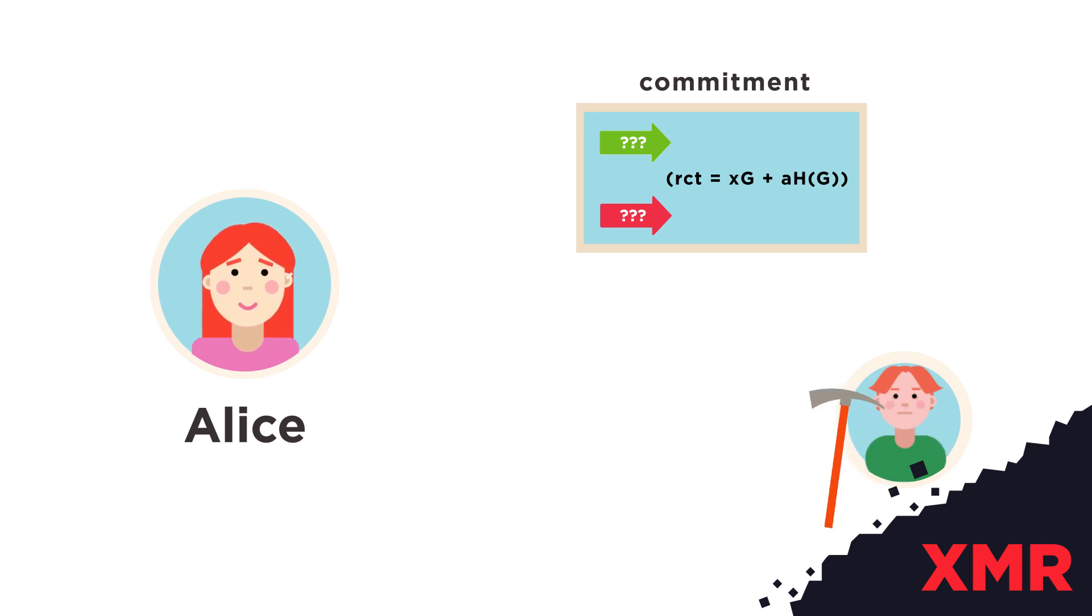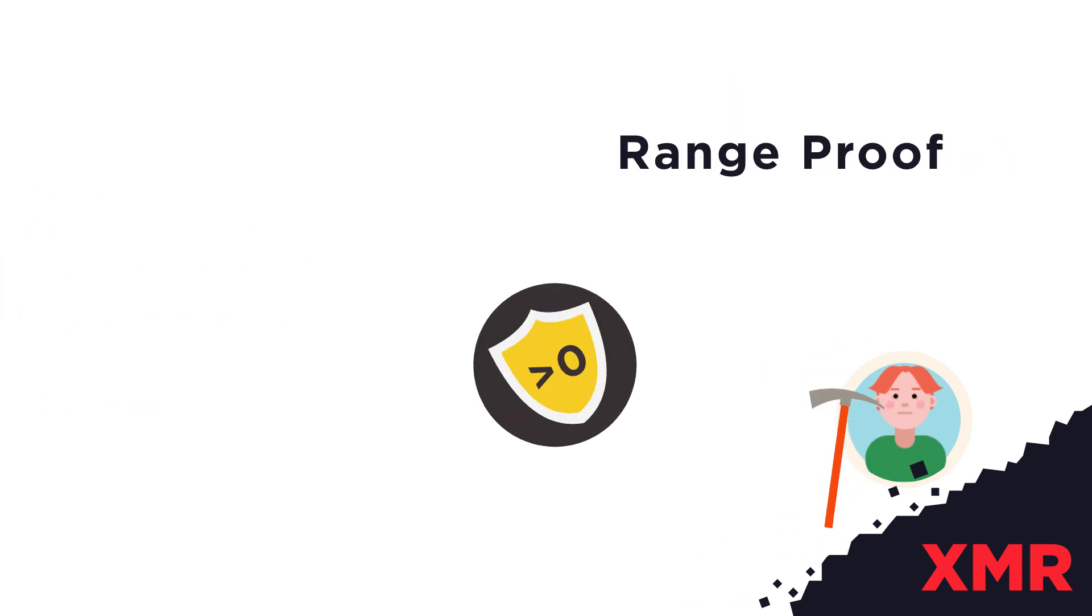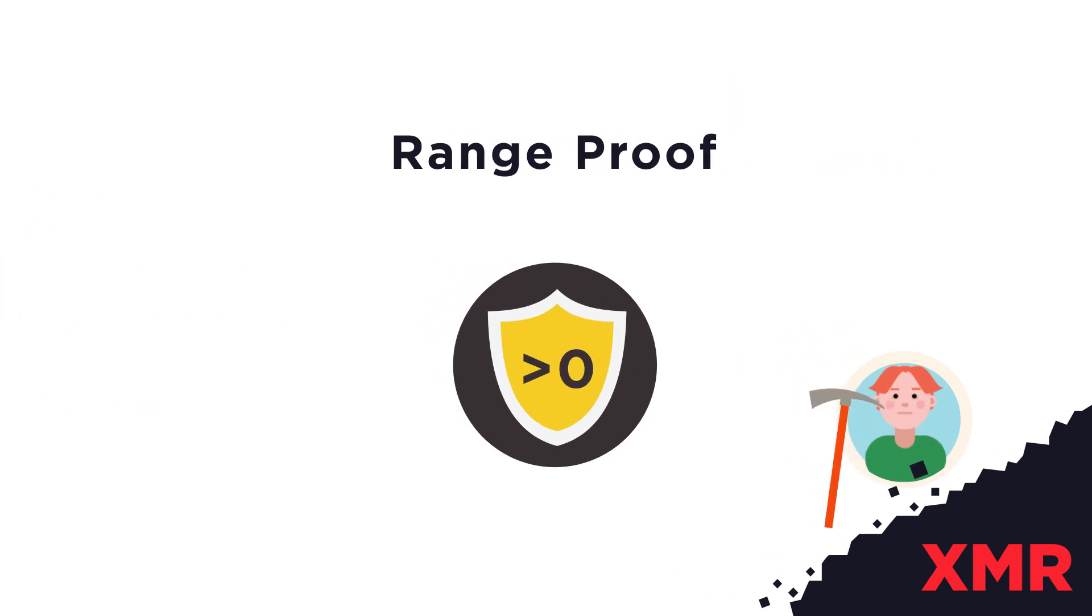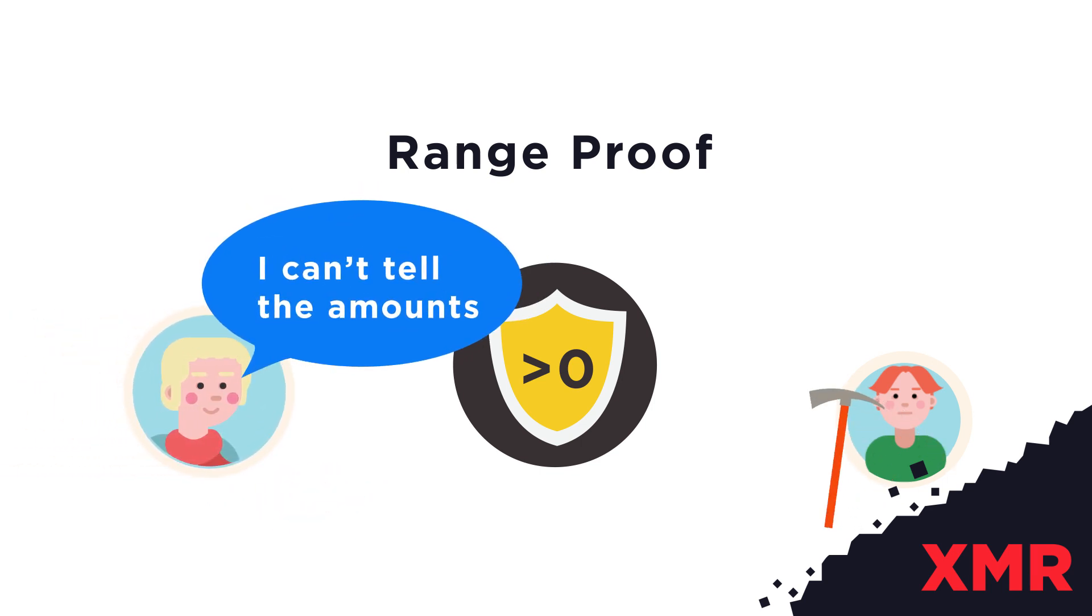Another important aspect of a Ring CT transaction is the range proof, which prevents senders from committing to negative values in order to secure the supply of Monero. A range proof cryptographically proves the amounts used in a transaction is greater than zero and less than some arbitrary number. While an outside observer is unable to see the actual amounts and outputs of a transaction, they are able to confirm that the transaction is a legitimate one that the network should accept.